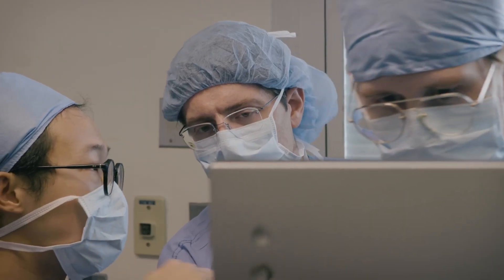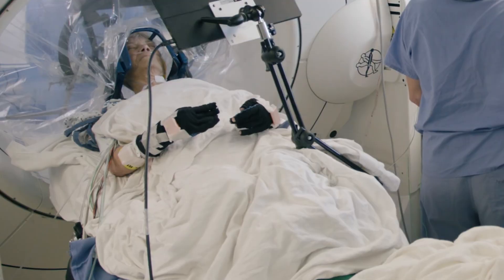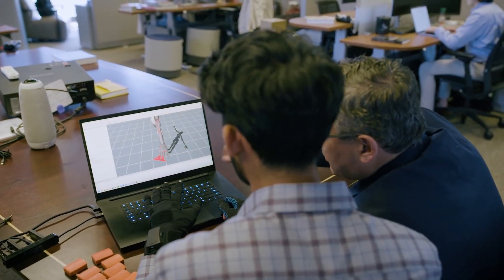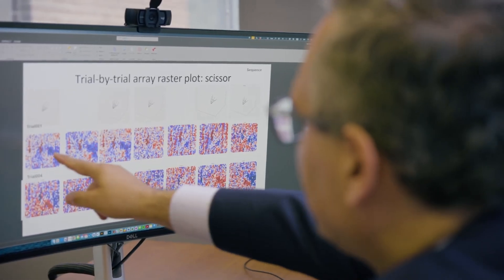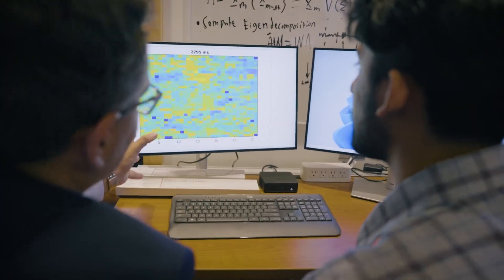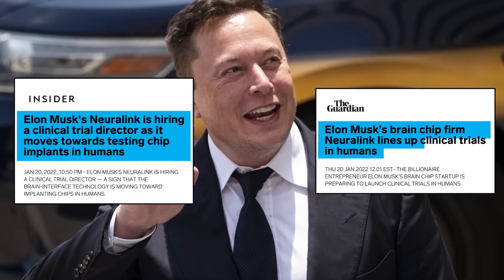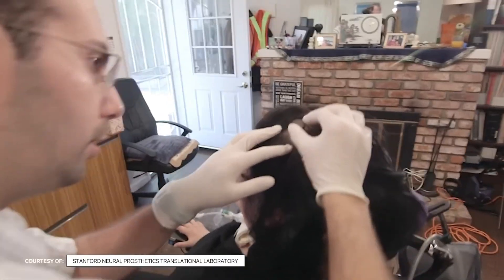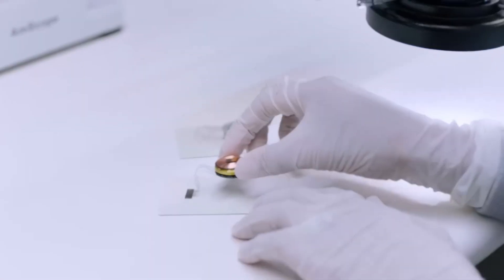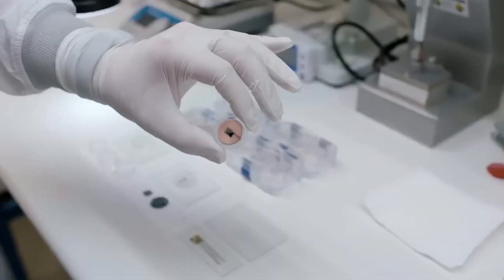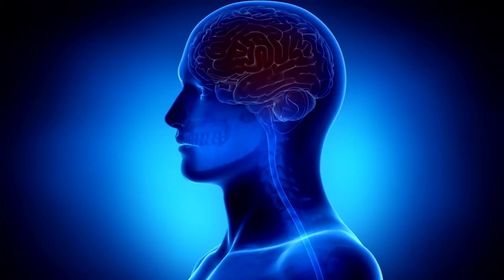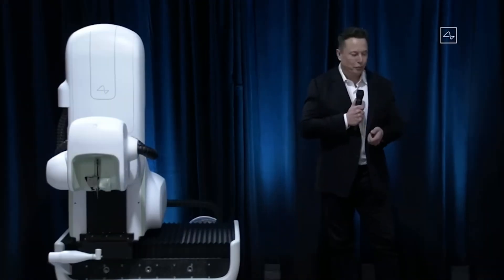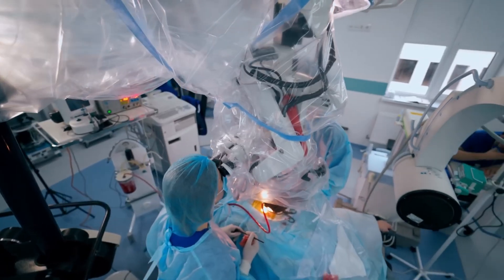The tech has come a long way since the first experiments back in the early 70s. Now, we've got major companies and universities racing to develop the technology, each taking slightly different approaches. Of course, Elon Musk's Neuralink grabbed all the headlines when they successfully put their first chip in a human brain. They called their first product telepathy. Pretty on the nose, right? It's designed to help paralyzed patients control devices just by thinking. But Musk isn't the only player in this game, not by a long shot.